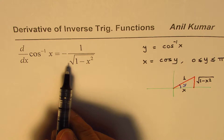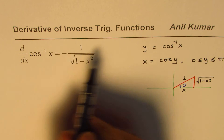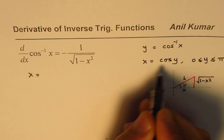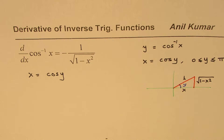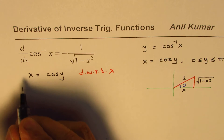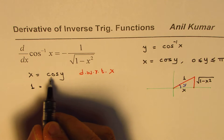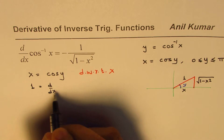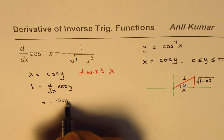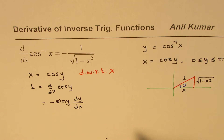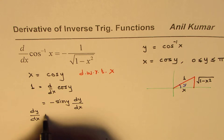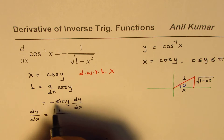So now we have x equals to cos y. We have already substituted cos inverse x as y, so we are saying x equals to cos y. If I differentiate with respect to x on both sides, I get 1 on the left side, and the derivative of cos y gives us minus sine y times dy/dx. From here, we can write dy/dx equals to 1 over minus sine y.